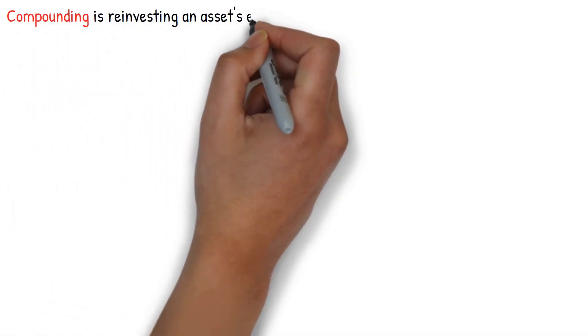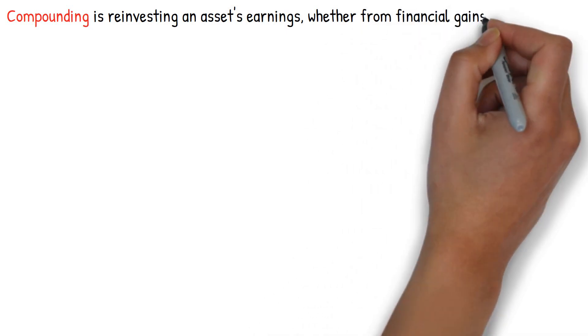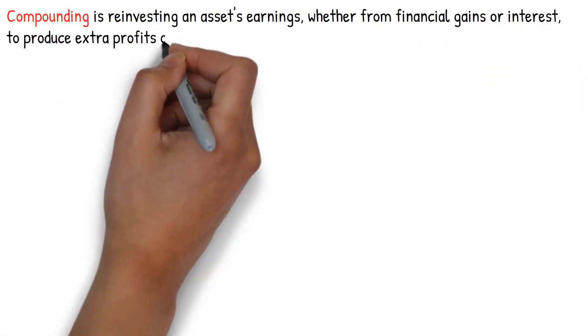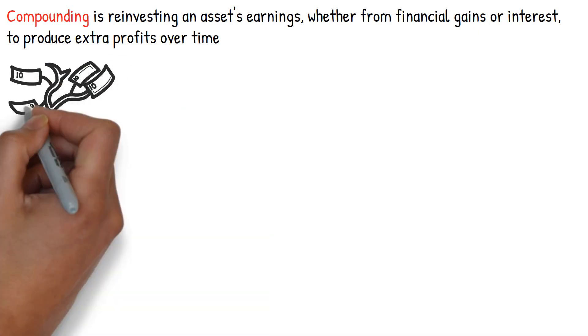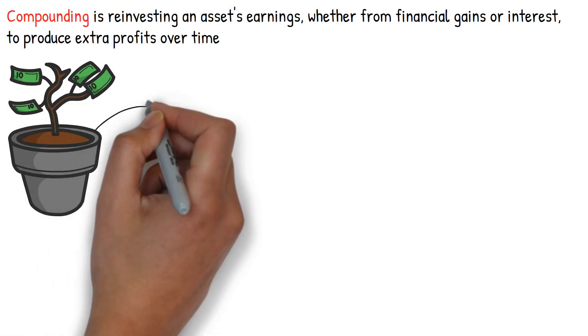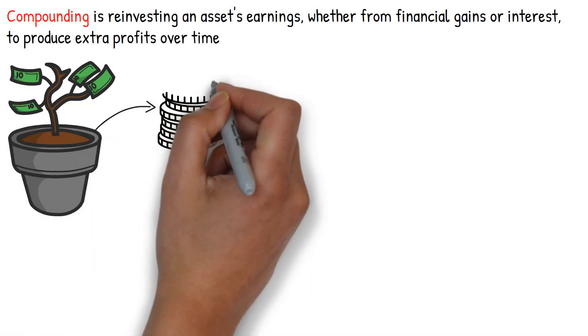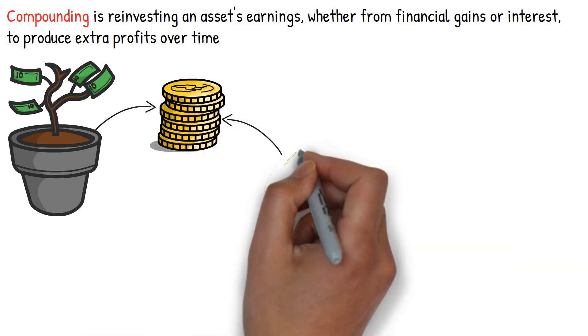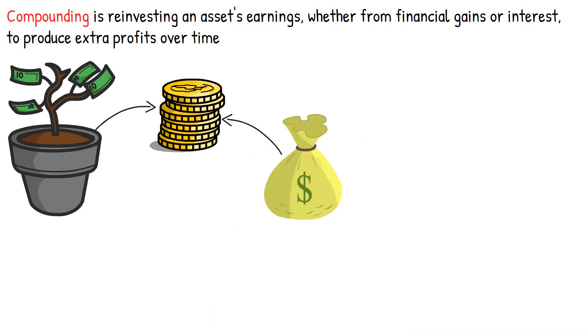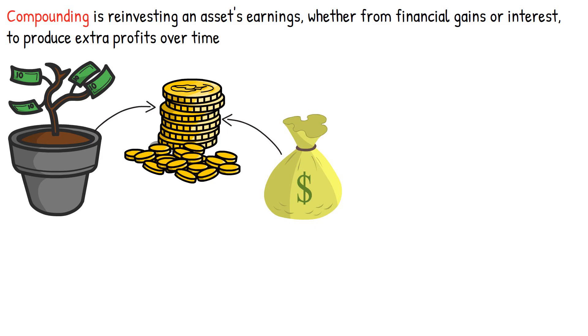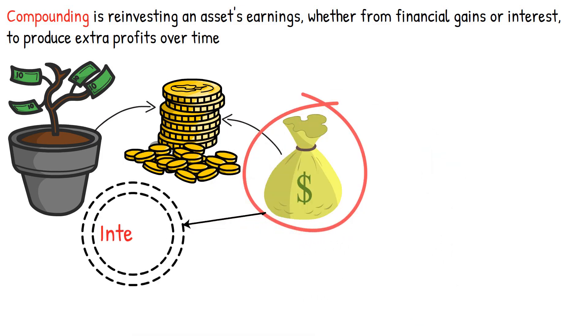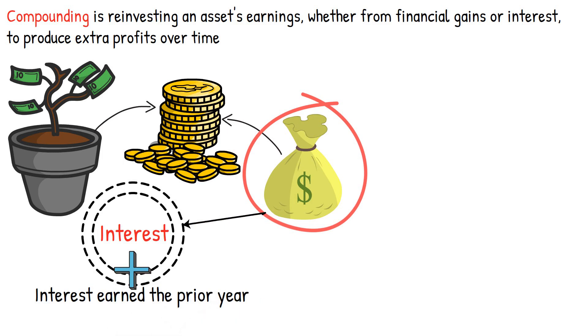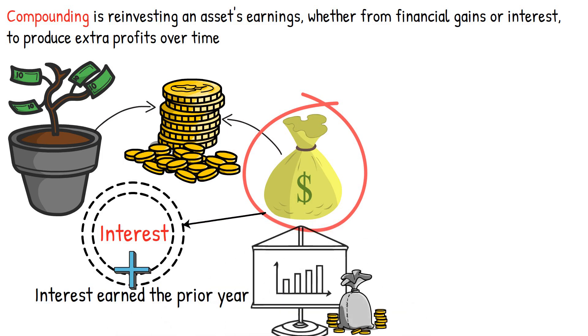Compounding is reinvesting an asset's earnings, whether from financial gains or interest, to produce extra profits over time. This exponential development happens because the investment generates revenues from its original principal and the accumulated earnings from previous times. Plus, compounding differs from linear growth in that only the principal gets interest each time. As a result, every year that the money is in your account, you make interest on the interest earned the prior year. This means that not only are your assets increased over time, but they are growing at a faster pace as well.